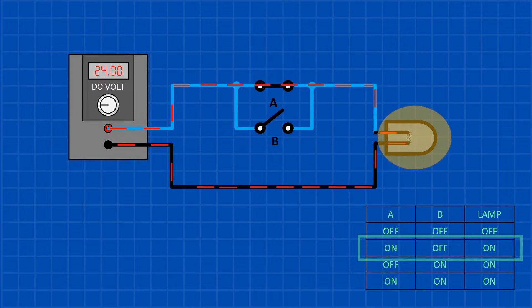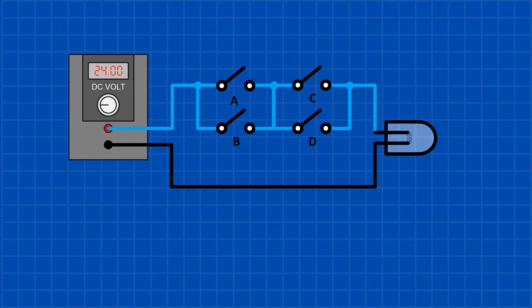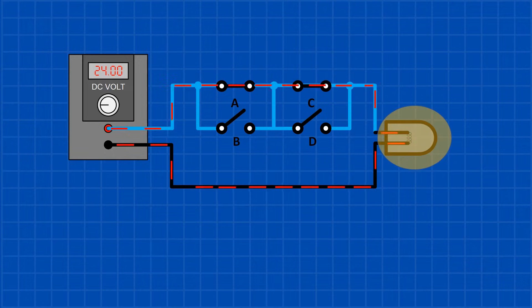We can also have a combination of both logics in a circuit. For example, we can have two parallel switches connected in series with two other parallel switches. The switches are commonly known as input devices and the lamp is known as an output device.